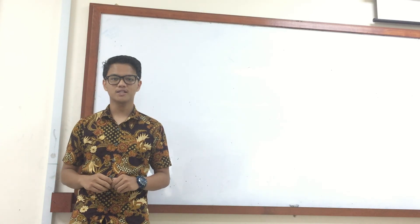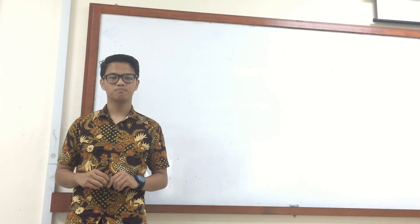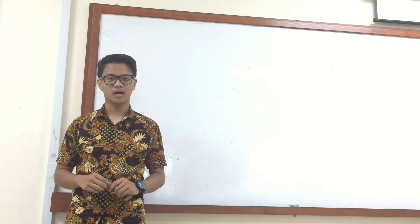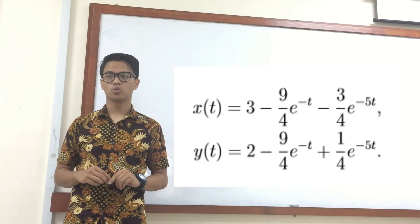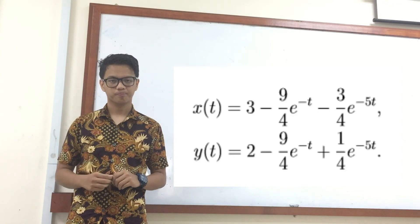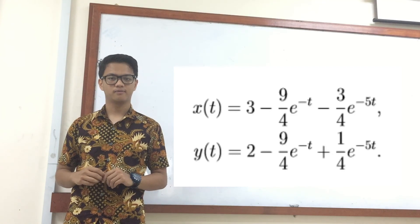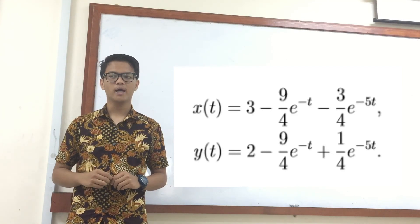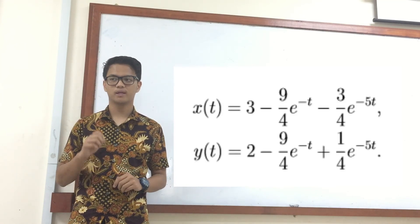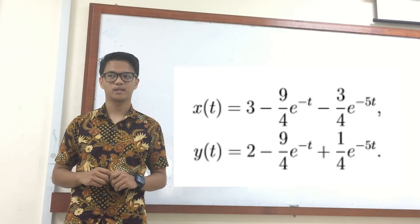Based on the solutions that we got, we managed to find the same answers using both manual and computer-aided solutions, which are: x(t) = 3 − (9/4)e^(−t) + (3/4)e^(−5t), and y(t) = 2 − (9/4)e^(−t) + (1/4)e^(−5t).